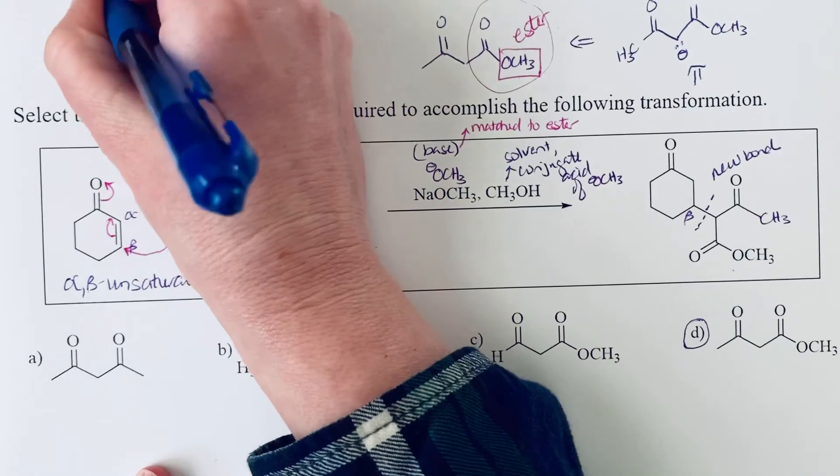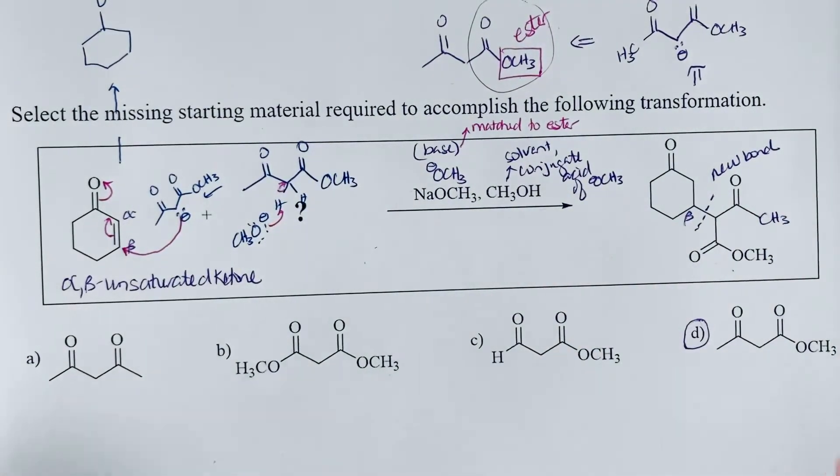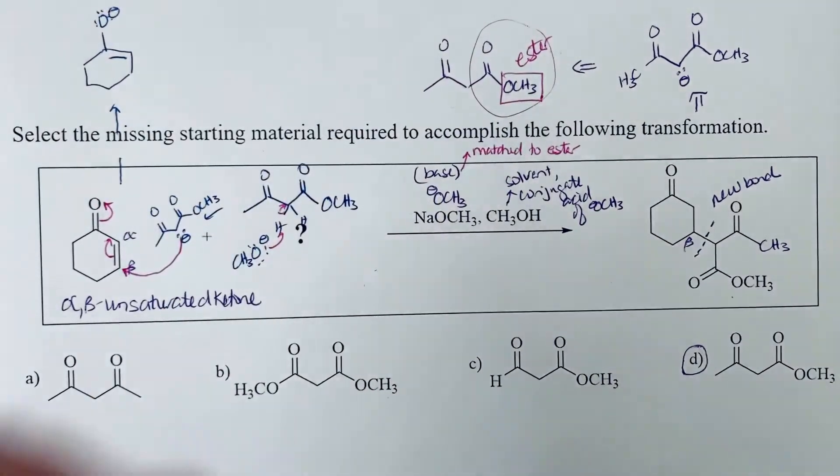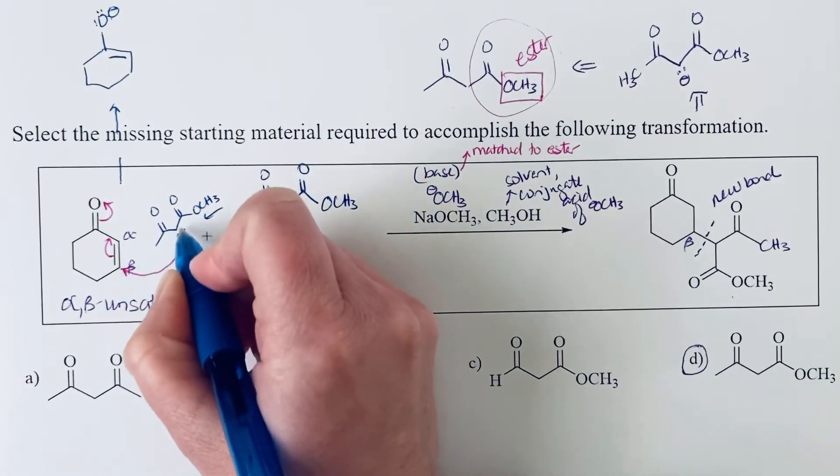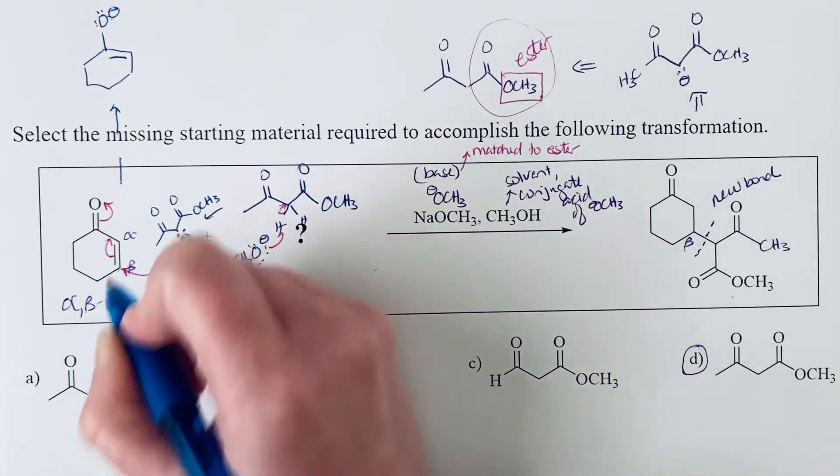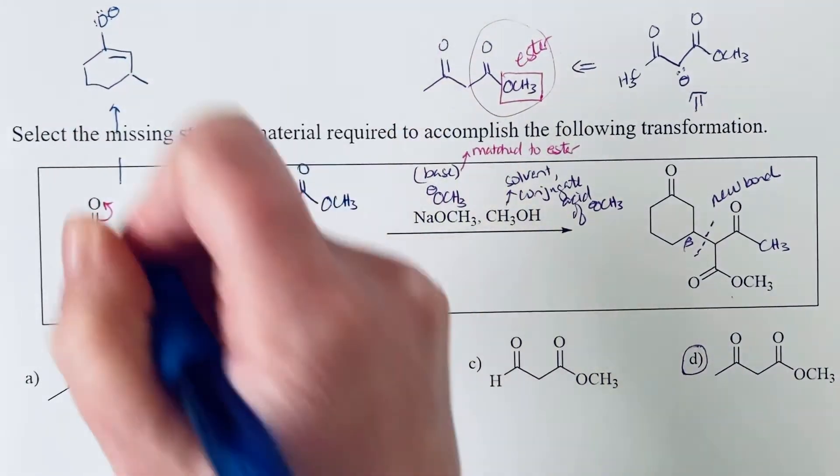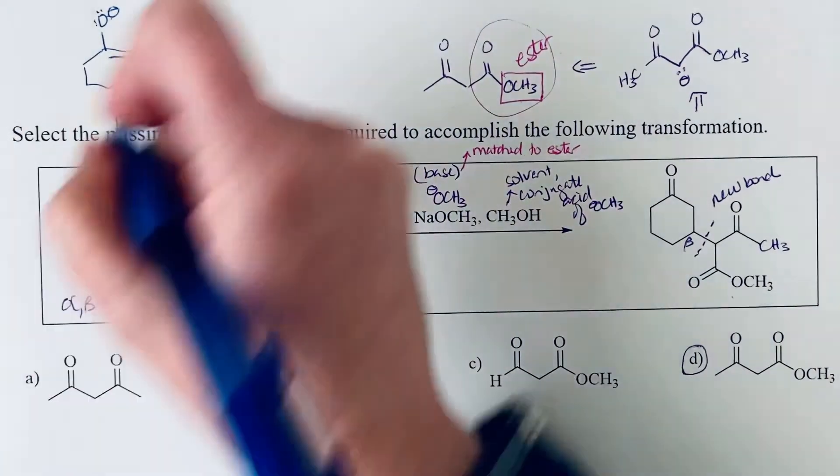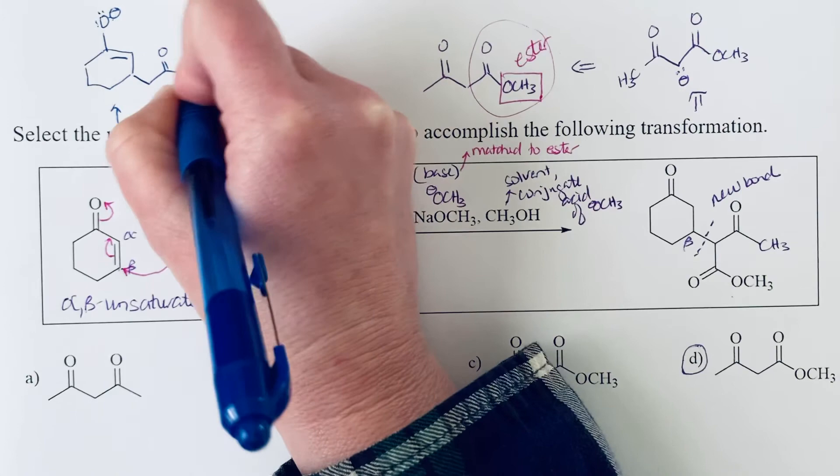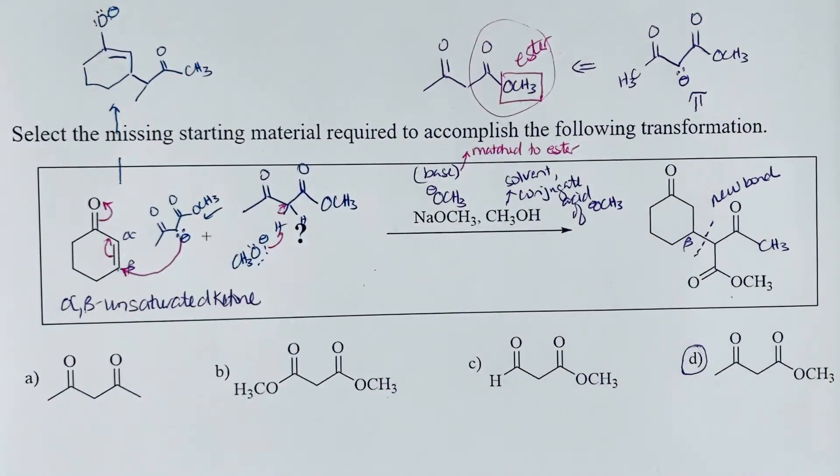So we've got the oxygen with the negative charge. A pi bond here. We've got a new bond between this resonance-stabilized enolate carbon and the beta carbon. So we can draw that in. And so we have attached this enolate to the molecule we started with.